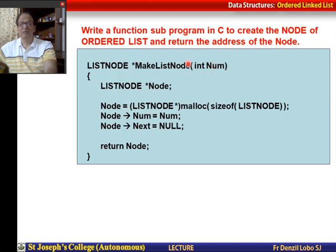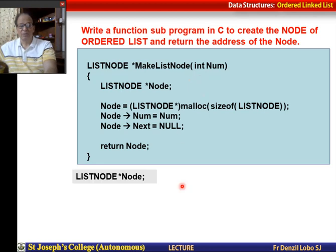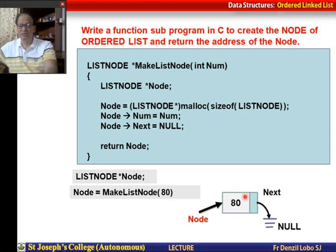We have written a function called make_list_node. I make a local variable called node, which is pointer type. I allocate memory, assign the number, make next null, and return node. So this is the function to make a node. For example, when I call make_list_node(80), the node will contain the address of the node containing 80, where next points to null.